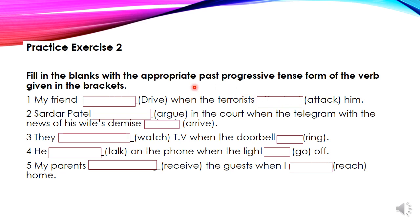In each sentence we have two actions that happened in the past. The first action we use in the past progressive form, and the second action we write in the simple past form. Number 1: my friend dash drive when the terrorist dash attack him. First action — my friend was driving — past progressive, singular subject so was, ING form driving. Second action — the terrorist attacked him — simple past, V2 of attack is attacked.